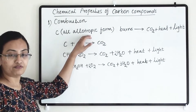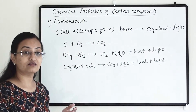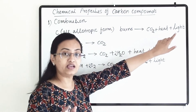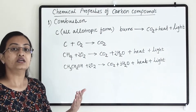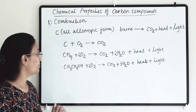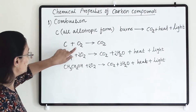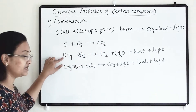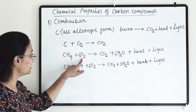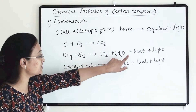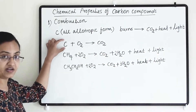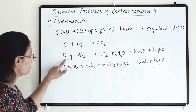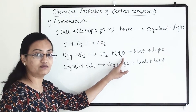The allotropic forms of carbon are graphite and diamond. When carbon burns it gives us carbon dioxide, heat and light. When methane — a saturated hydrocarbon — burns, it reacts with oxygen and gives us carbon dioxide, water, heat and light. Here hydrogen is also present in the molecule, so that hydrogen reacts with oxygen and gives us water.